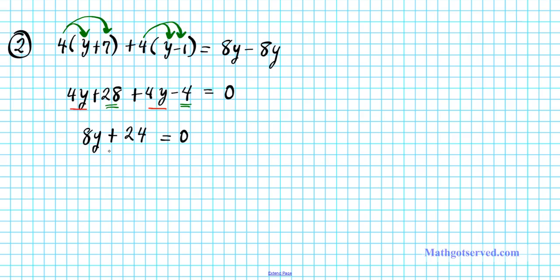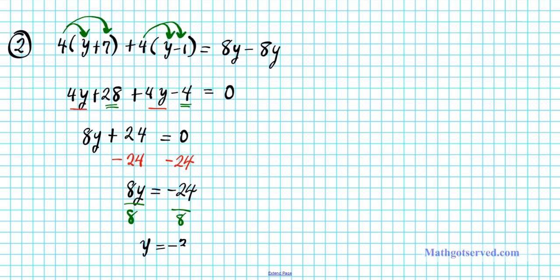Now we want to isolate y, so we subtract 24 from both sides, which yields 8y equals negative 24. To finish, we divide both sides by 8 and get y equals negative 3.